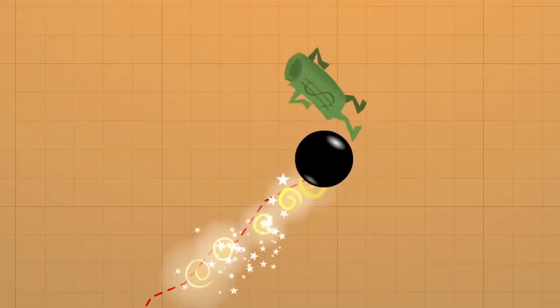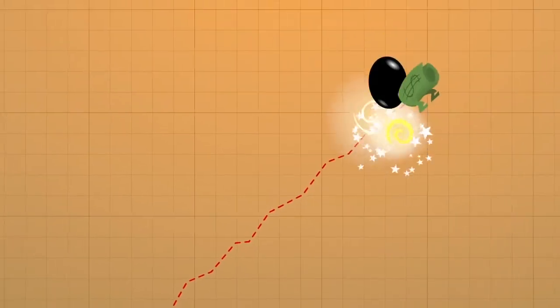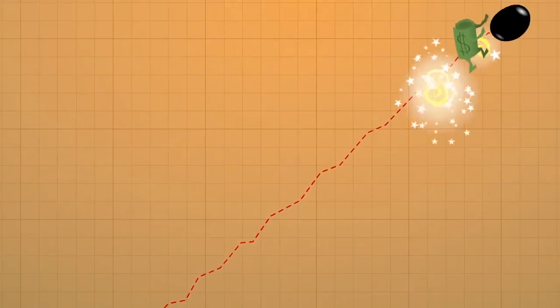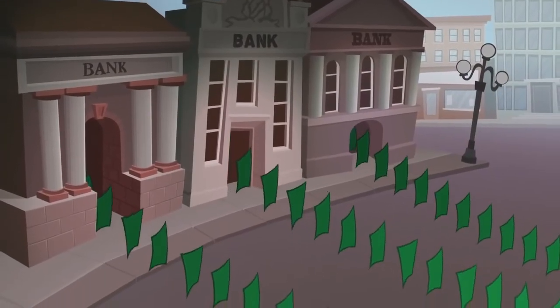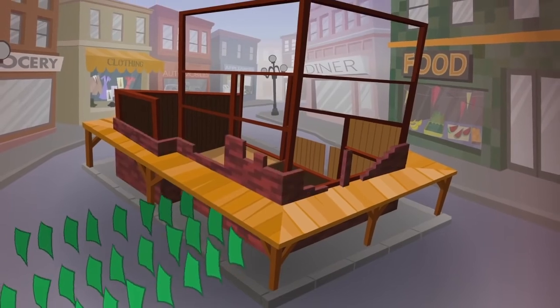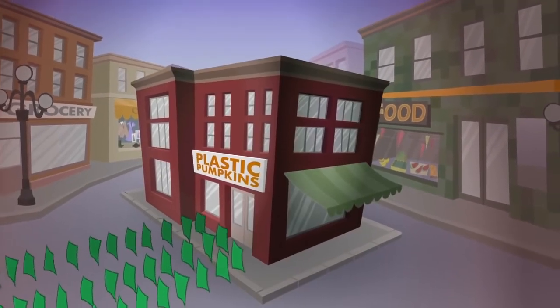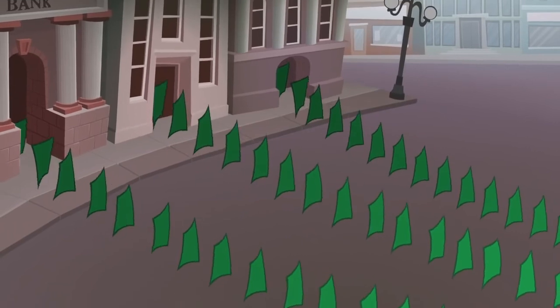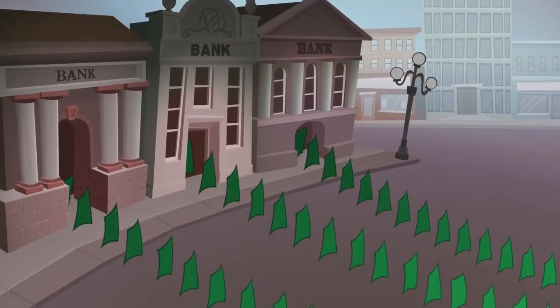With each doubling, demand for energy and resources will exceed all the previous doublings combined. The financial system is built on the assumption of growth, which requires an increasing supply of energy to support it. Banks lend money they don't have, in effect creating it. The borrowers use the newly created loan money to grow their businesses and pay back the debt, with an interest payment, which requires more growth.